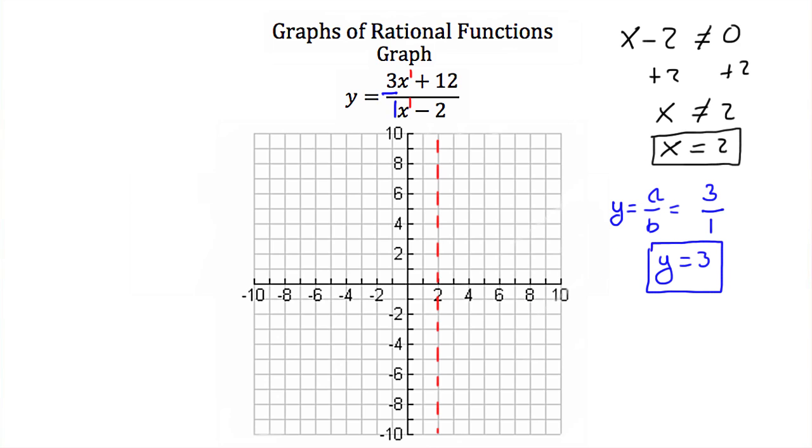And I can draw that in. It should look something like that. Now that I've found all my asymptotes, I'm going to have to make a table of values to figure out where my graph is going to lie in relation to these asymptotes.